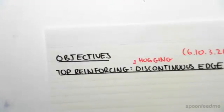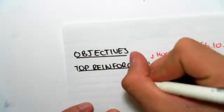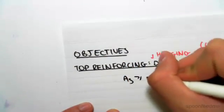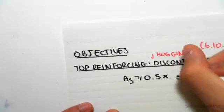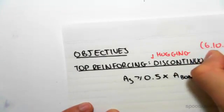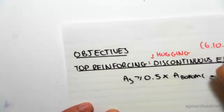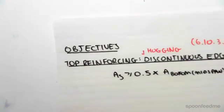We know that the area of steel we need is just 0.5 times the area we found for bottom steel at mid span. All it's going to be is 0.5 times the area in the bottom.